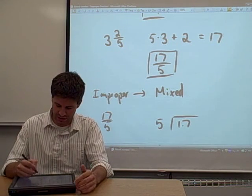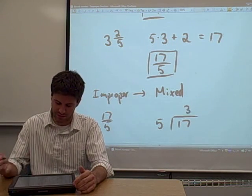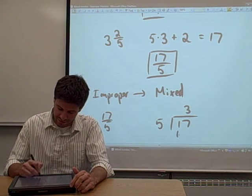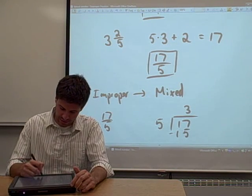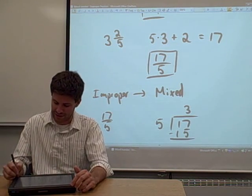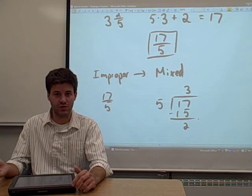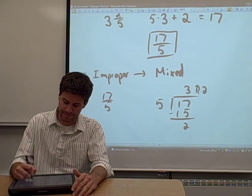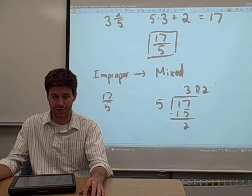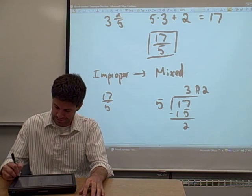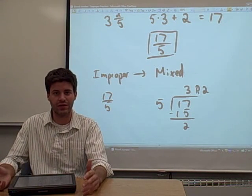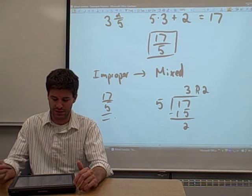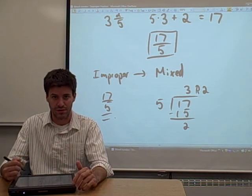How many times does 5 go into 17? It goes in 3 times. 3 times 5 gives you 15. You subtract that number and you get a 2. That 2 is your remainder — a lot of people write it like this: 3, remainder 2. Now we actually have everything we need to convert this improper fraction into a mixed number.